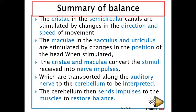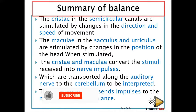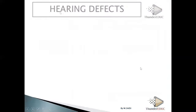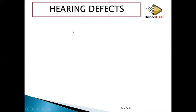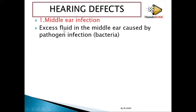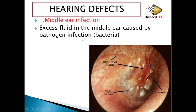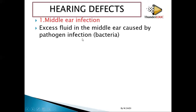Make sure the highlighted points are not missed when writing your essay or answering your question. Now, hearing defects — problems with hearing. Number one: middle ear infection. This is whereby excess fluid in the middle ear is caused by pathogen infection. A pathogen is a disease-causing organism, for example bacteria or viruses — an organism which causes disease is called a pathogen. So excess fluid in the middle ear is caused by pathogen infection, specifically bacteria.